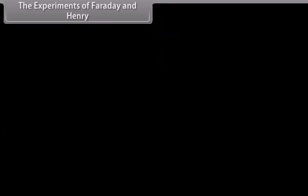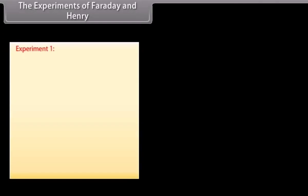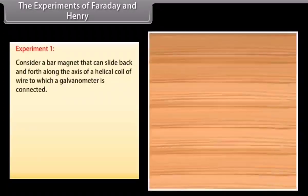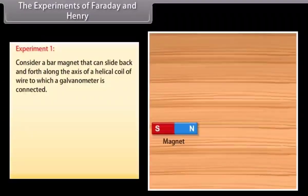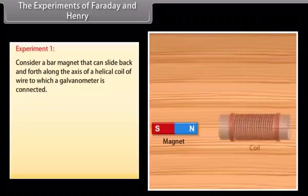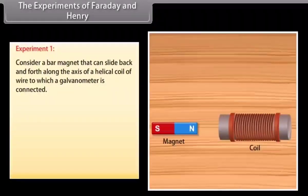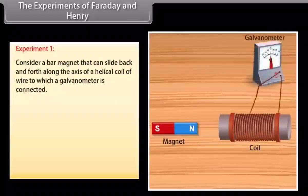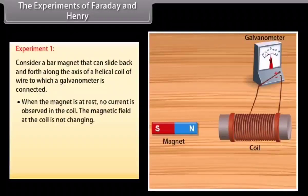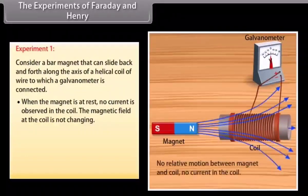The Experiments of Faraday and Henry — Experiment 1: Consider a bar magnet that can slide back and forth along the axis of a helical coil of wire to which a galvanometer is connected. When the magnet is at rest, no current is observed in the coil. The magnetic field at the coil is not changing.